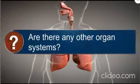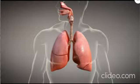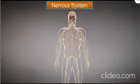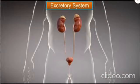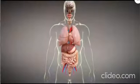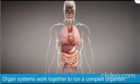Are there any other organ systems? Some of the organ systems are the nervous system, the digestive system, and the excretory system. All these organ systems work together to run a complex organism.